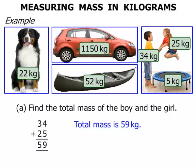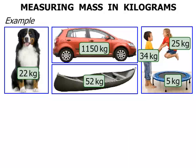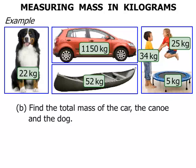Terrific. Next, we're asked to find the total mass of the car, the canoe, and the dog. So a few things to add there. The car has a mass of 1,150 kilograms, the canoe is 52, and the dog is 22.